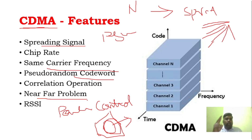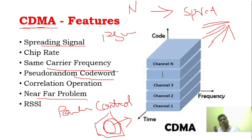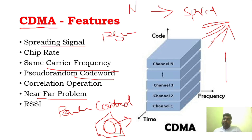What is the near-far problem? This is a very important question. The stronger signal will dominate the weaker signal. The base station will not be able to receive the weaker signal properly — it will be very very weak. For example, if you are using a mobile phone normally, you are at a distance from the tower and everything works fine.